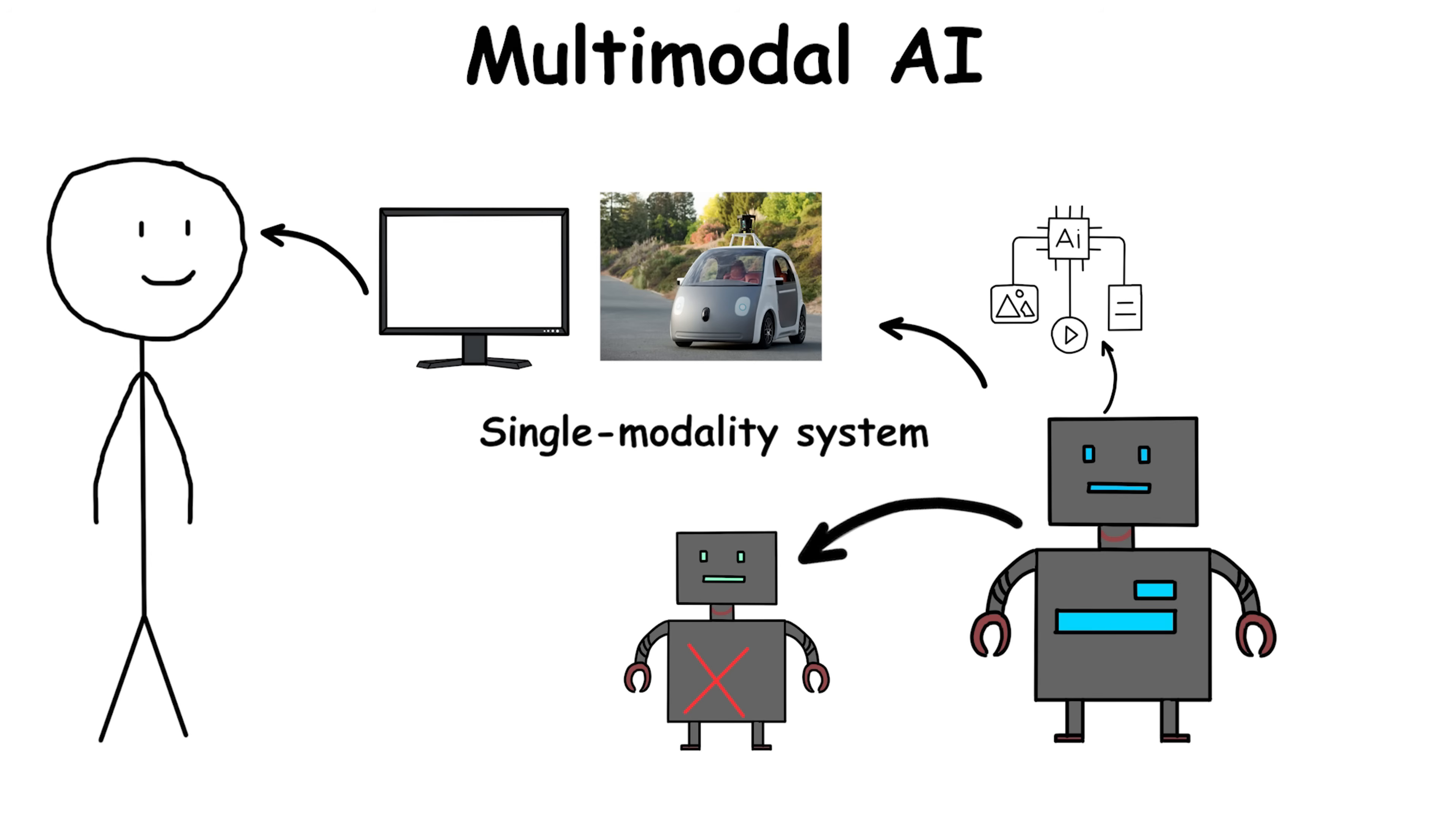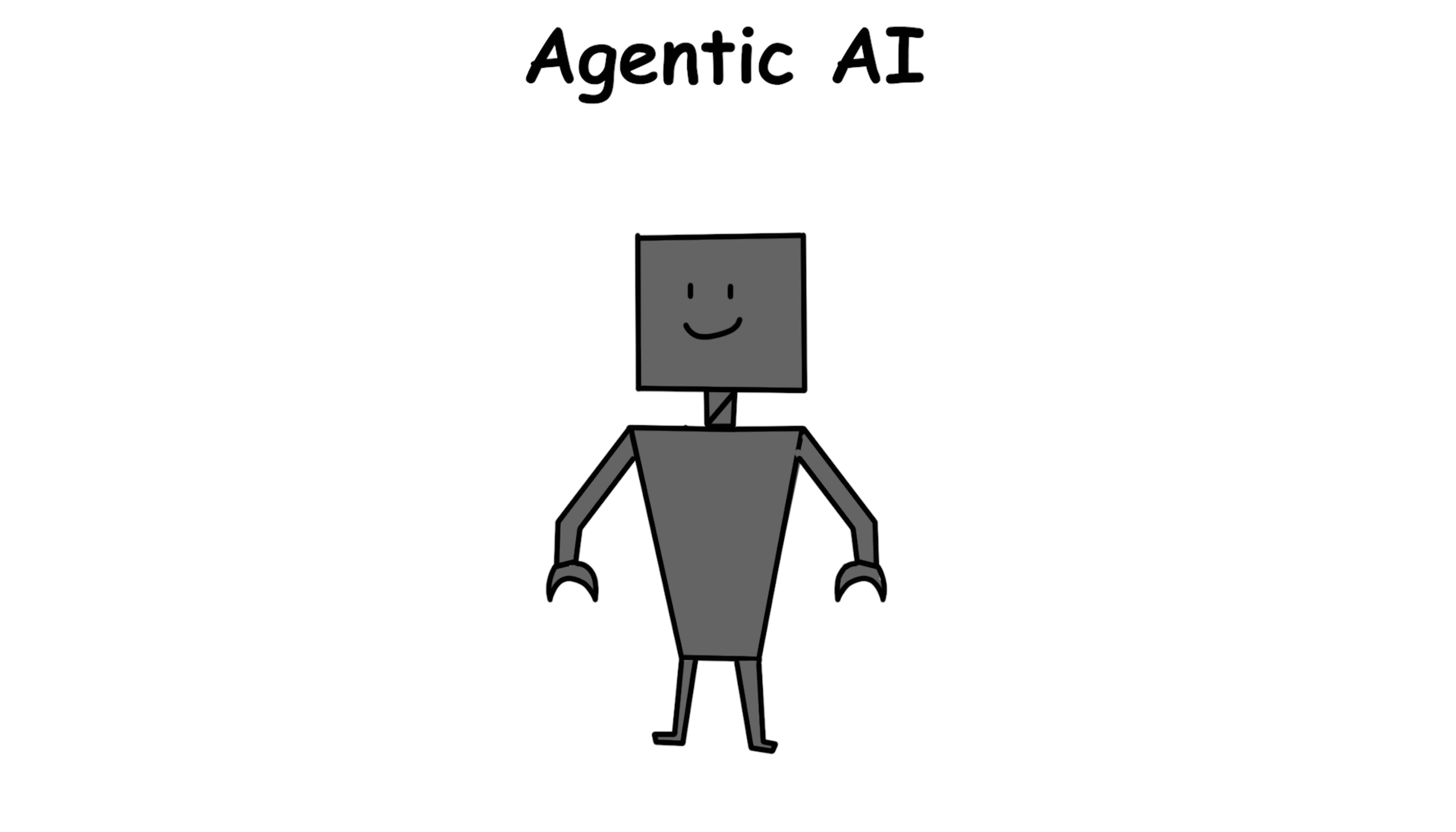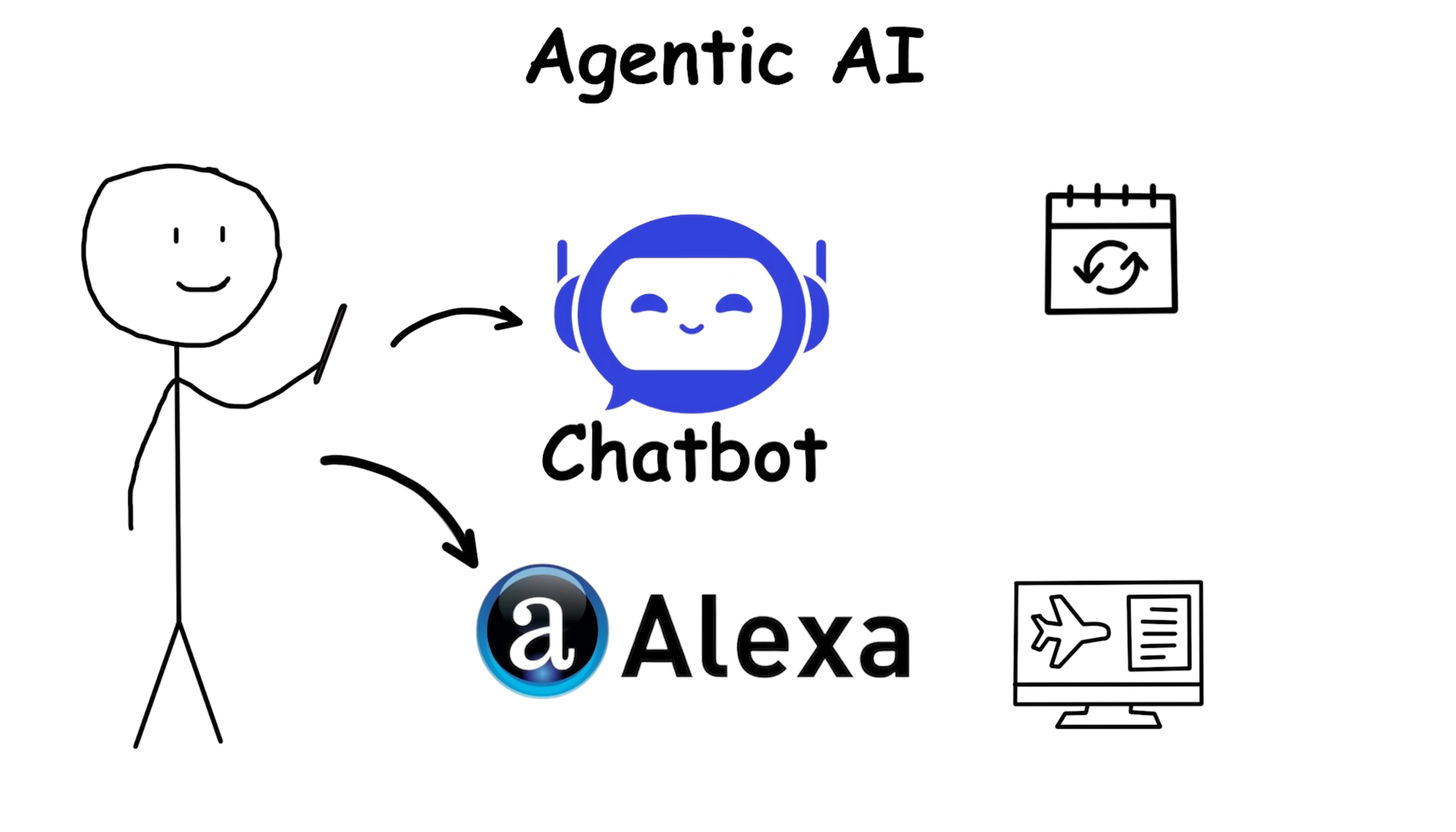Agentic AI doesn't just wait for commands, it takes action to reach goals. It's the difference between a chatbot giving info and an AI assistant that books flights, reschedules your meetings when delays happen, then orders a ride, all without you micromanaging.